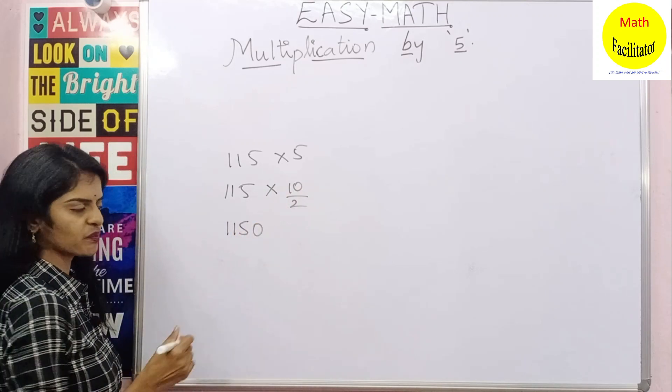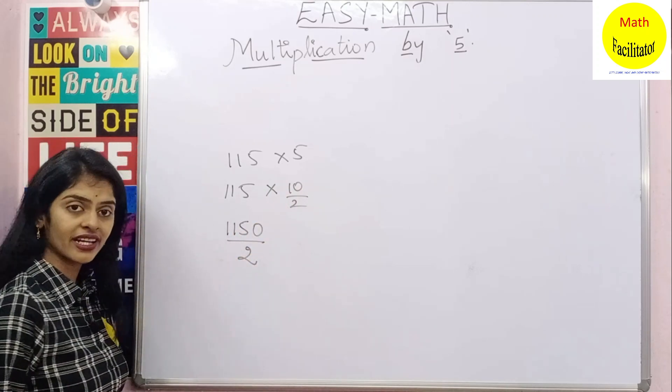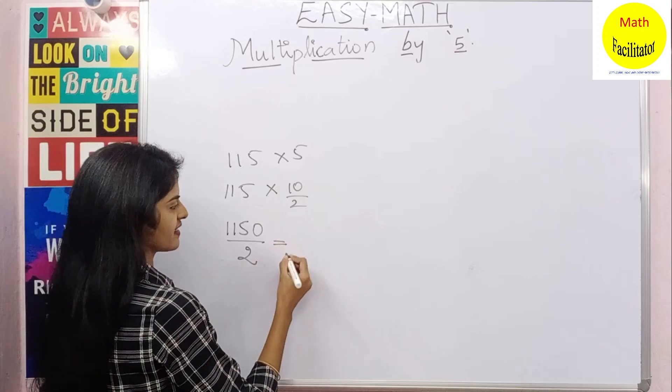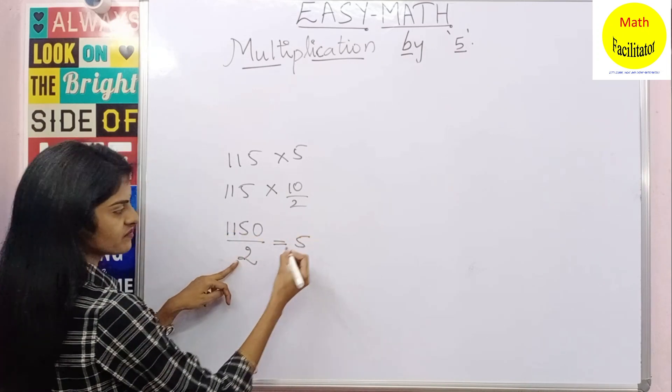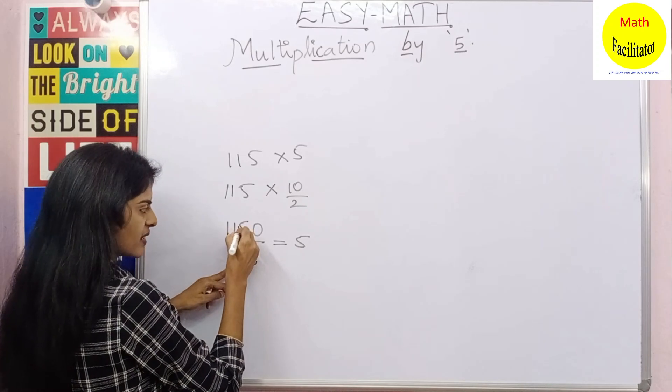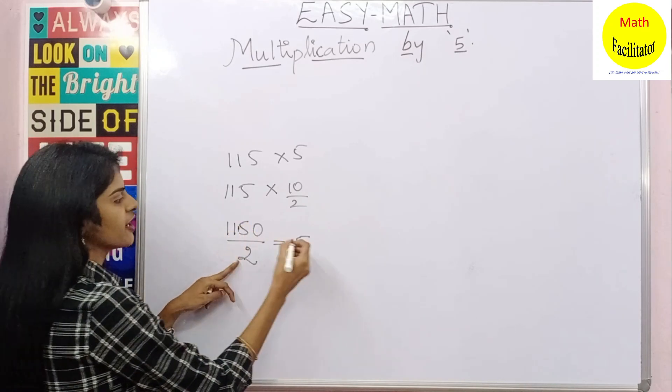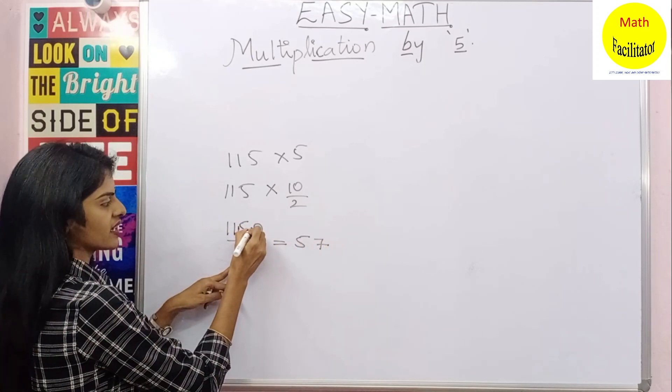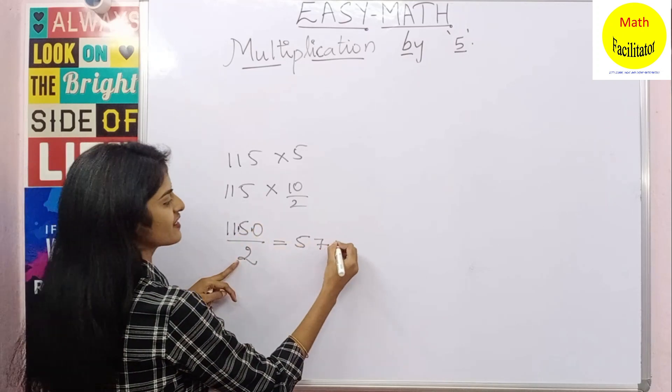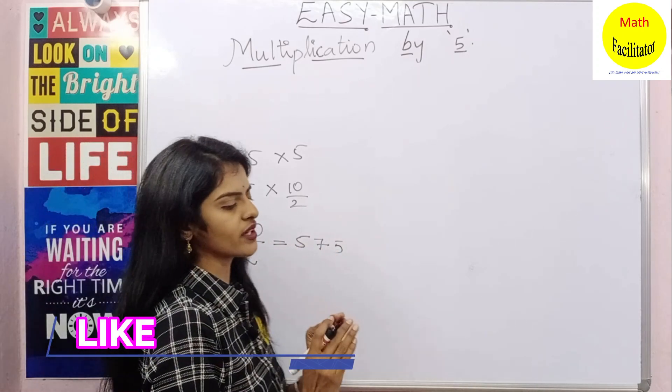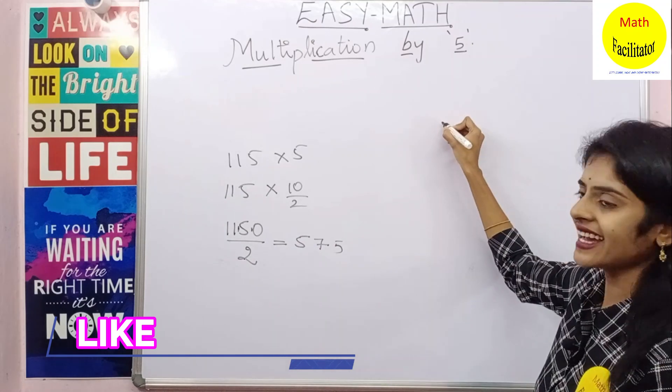Yes. So this is nothing but now 2 times 5 is 10. 1 is remaining, so this becomes 15. 2 times 7 is 14. Now 1 is remaining, this becomes 10. 2 times 5 is 10.